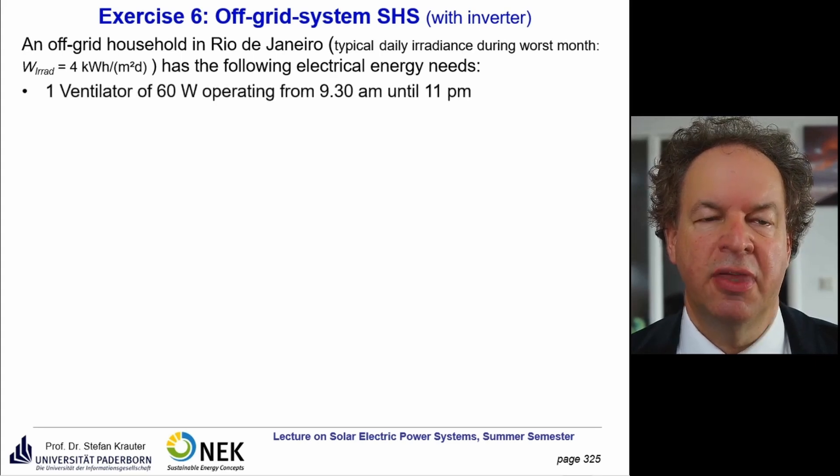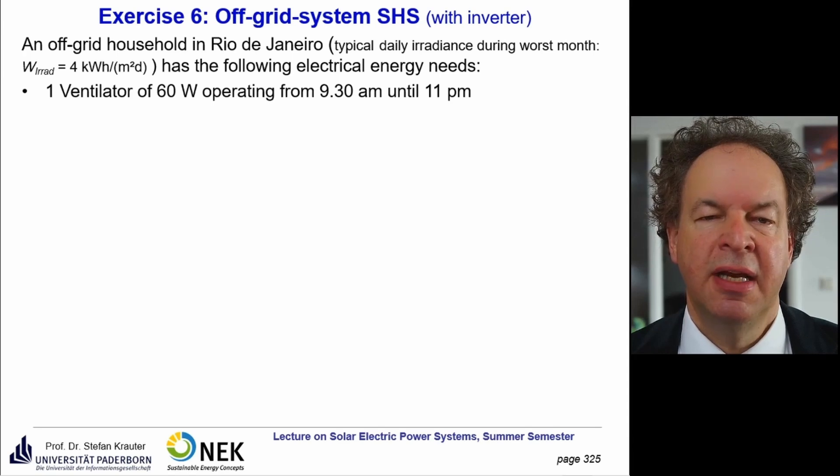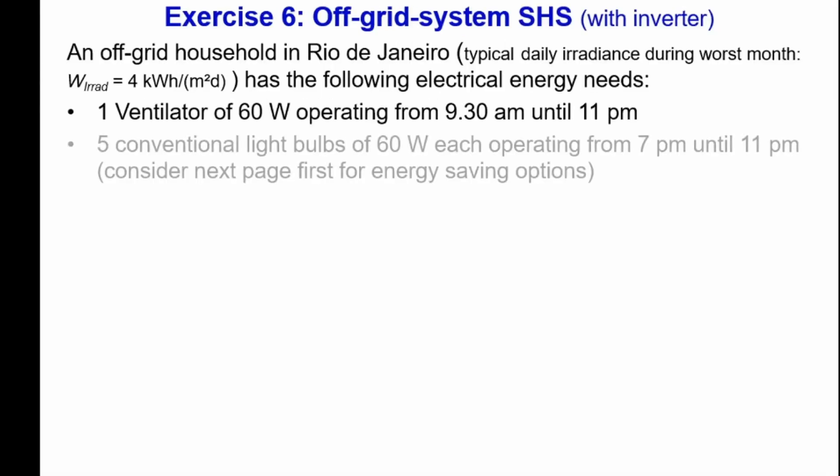We have a ventilator with a power of 60 watts, operating from 9:30 until 11 p.m. We have five conventional light bulbs at 60 watts each, operating from 7 p.m. until 11 p.m. Here we should consider energy-saving options. As an engineer, you should not only accept the given values — you can also modify loads to make the whole system more economical.